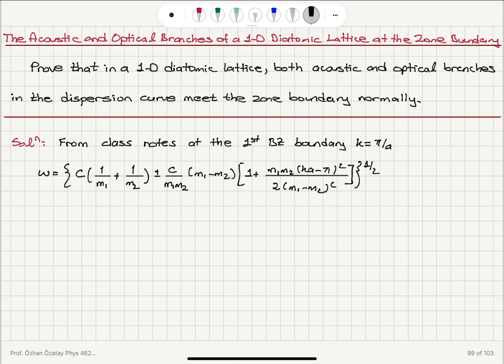If we call the quantity inside the square root as A, the group velocity dω/dk would be the derivative with respect to A, which is (1/2)A^(-1/2), and then we have dA/dk.